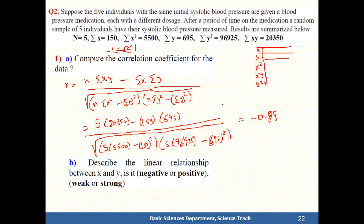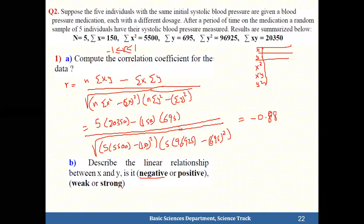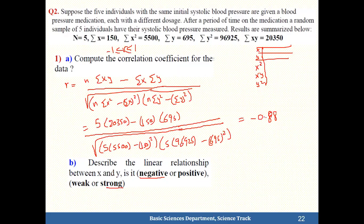Since r = negative 0.88, there is a strong negative relationship between x and y. The sign is negative so it's a negative relationship, and 0.88 is between 0.7 and 1, so it is strong. The medication has an inverse relationship with blood pressure.